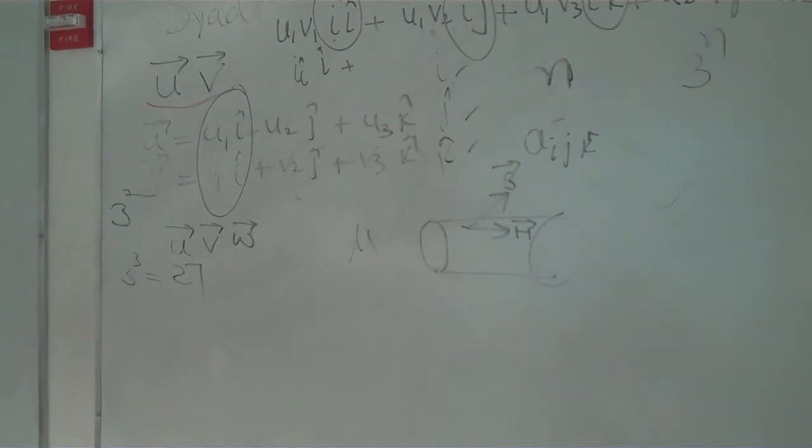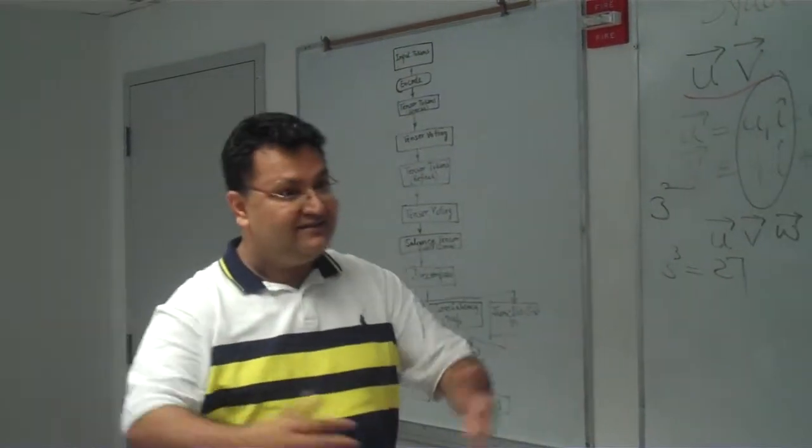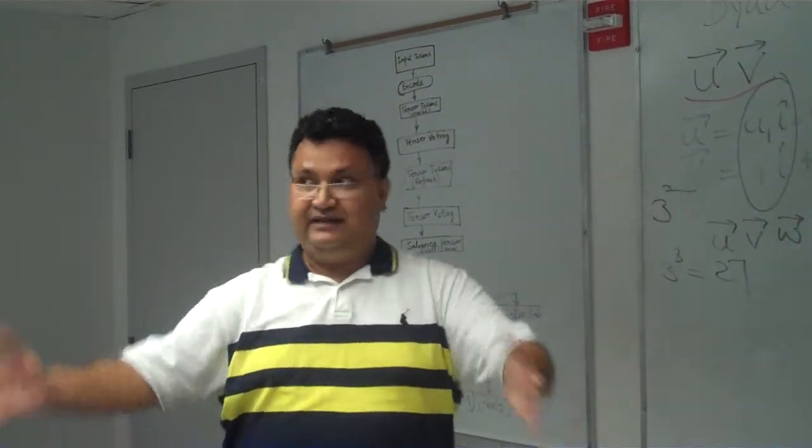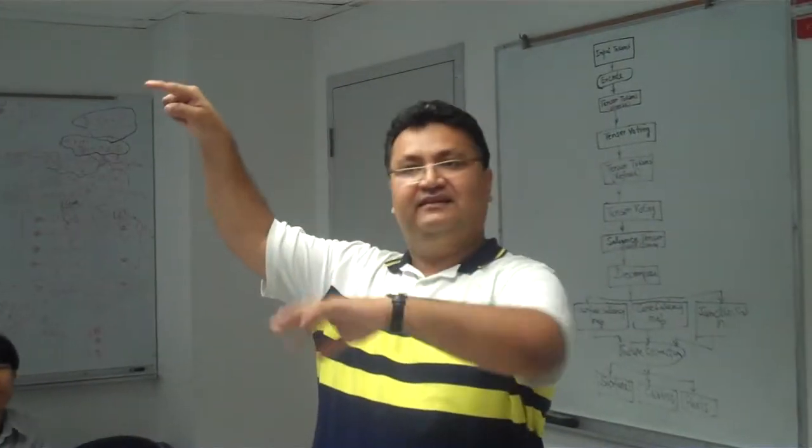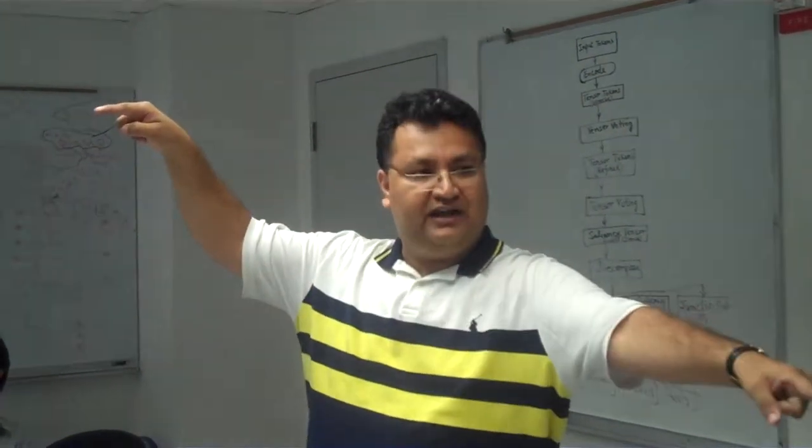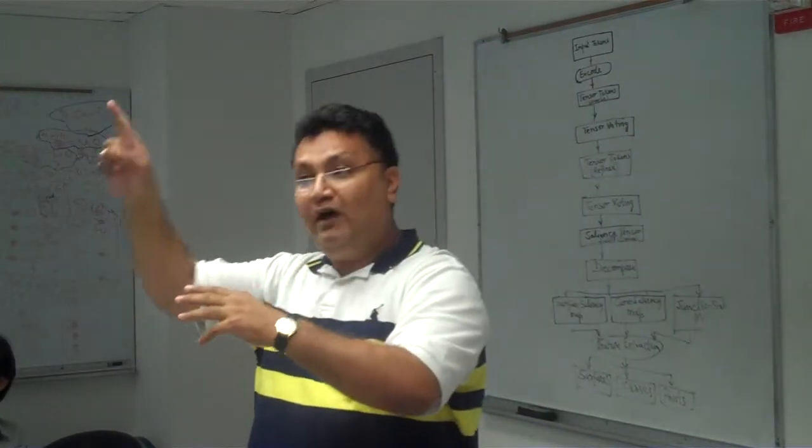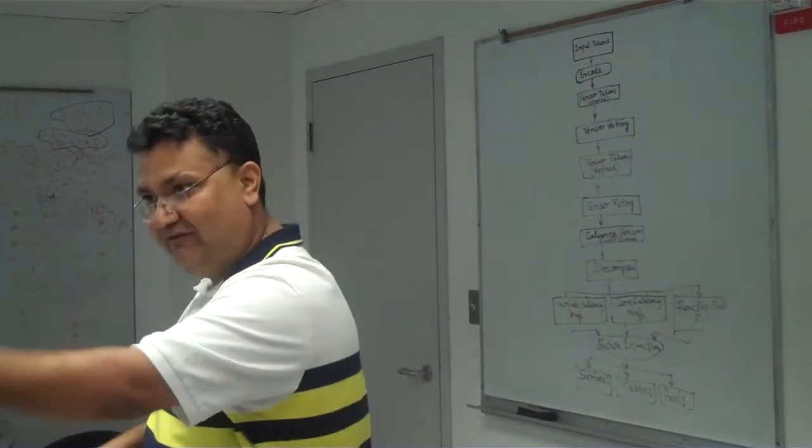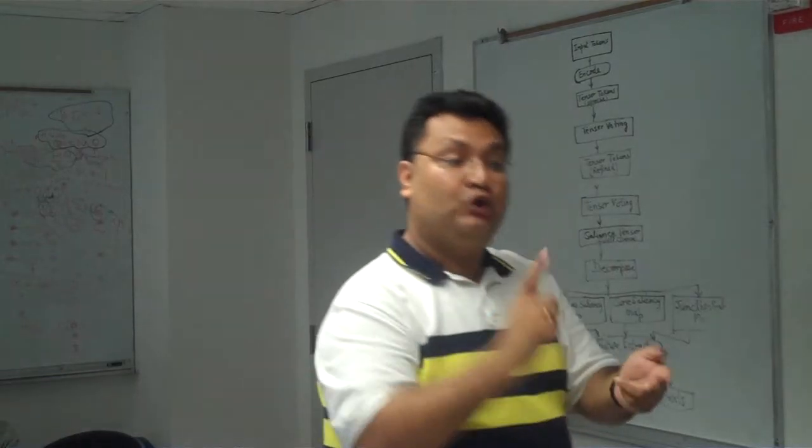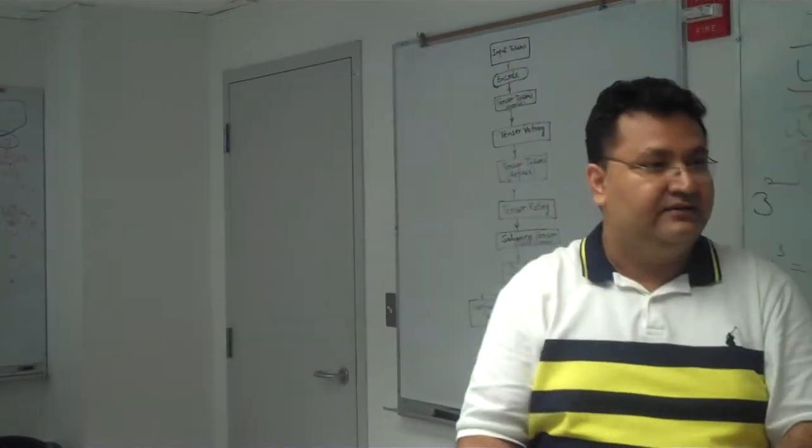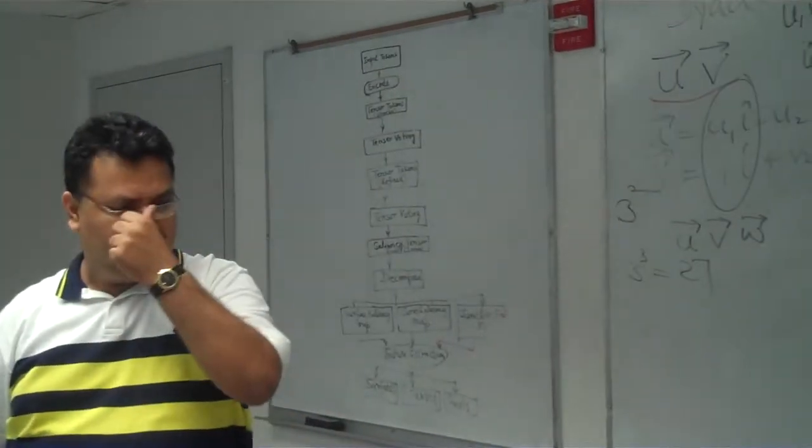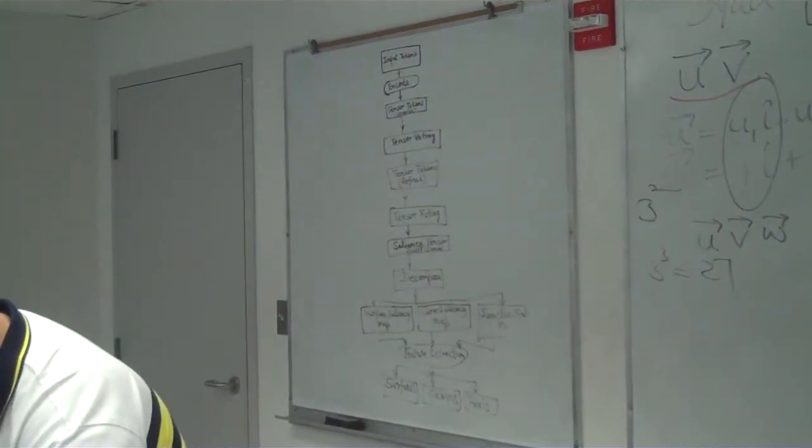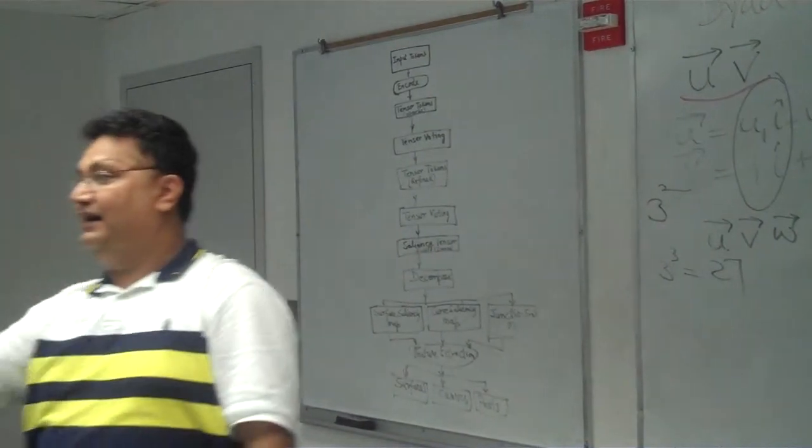Now you are saying that a vector cannot be represented as a tensor. No, all tensors of rank 1 are vectors. So tensor is a general term. If I will say tensor of rank 0, it means it has 0 direction, scalar. Tensors of rank 1, 1 direction, vector. Tensors of rank 2, dyad. Tensors of rank 3, triad.